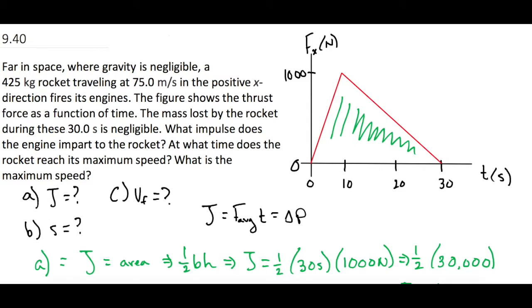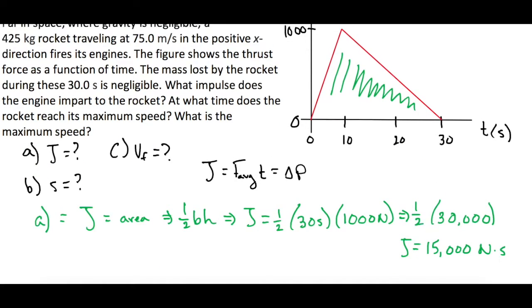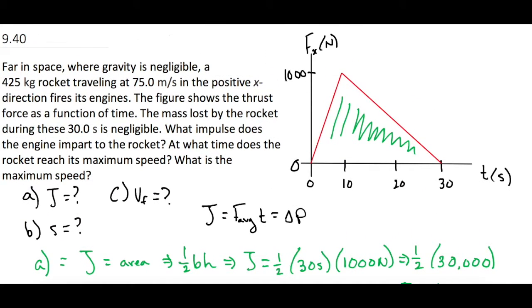When we look at this graph, it's tempting to think that at 10 seconds is where it's going fastest, because that's the highest point. But we have to think about what this graph is telling us. This is force versus time, not velocity versus time. At zero seconds, the rocket is already moving at 75 meters per second.